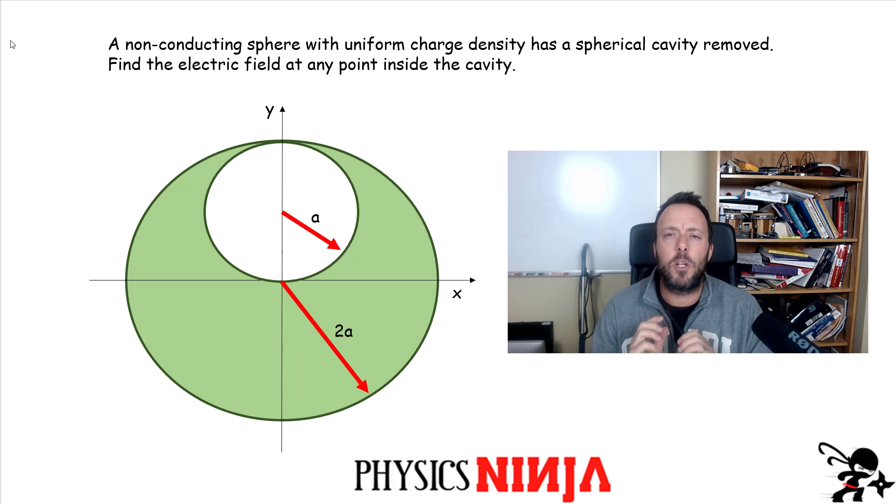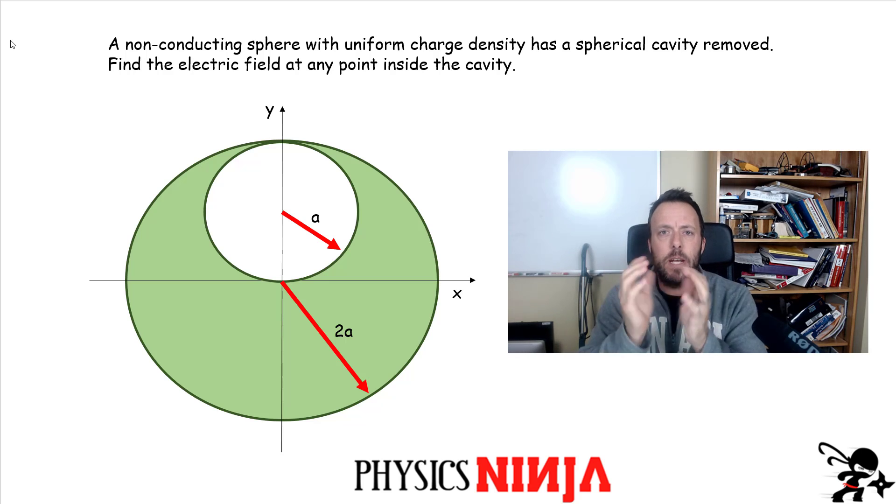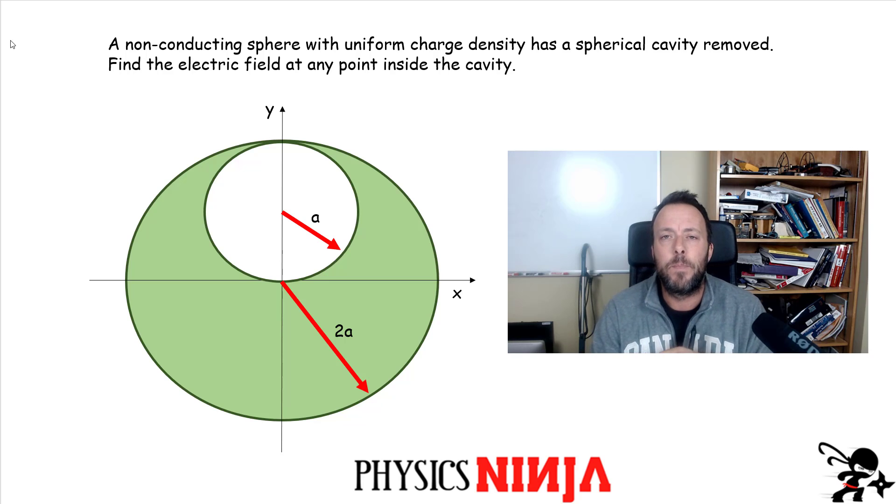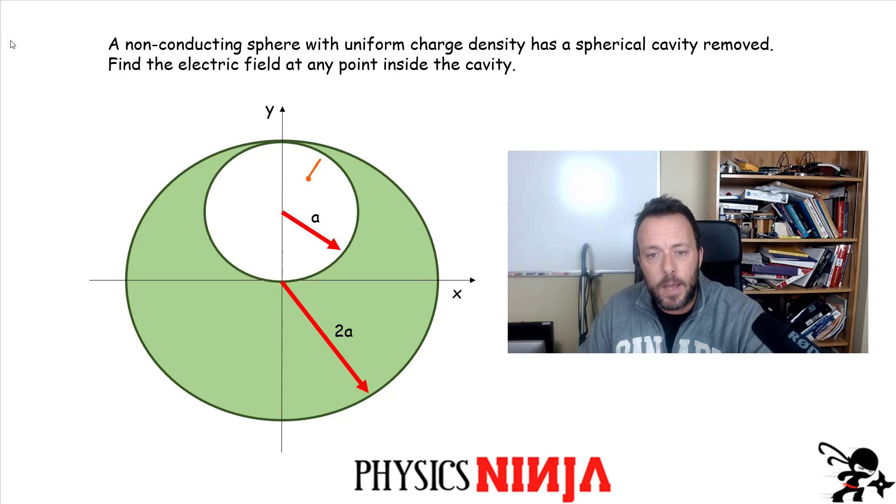Hi everybody, Physics Ninja here. Today I want to look at a very interesting problem. We have a sphere, a three-dimensional object, and inside that sphere there is a cavity, so there's material that's been removed. This sphere is non-conducting and there is charge that is uniformly spread out throughout the volume. Inside the cavity there is no charge. My question is how would you find the electric field at any point inside that cavity? Imagine I have a point at some arbitrary location, it could be anywhere, and how would I find the electric field produced by all of these charges in that green shaded area?